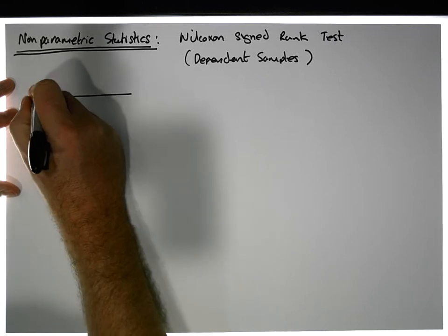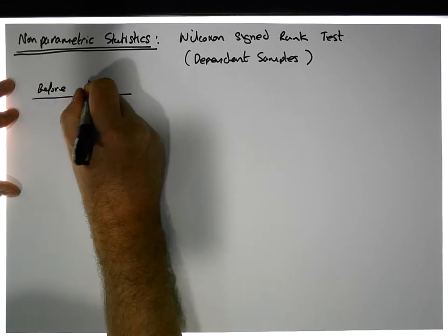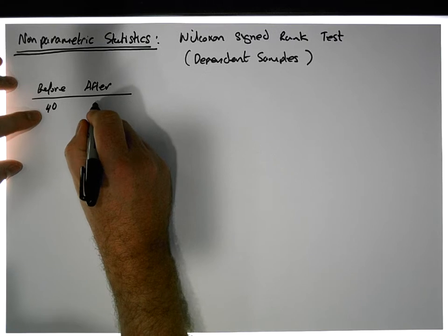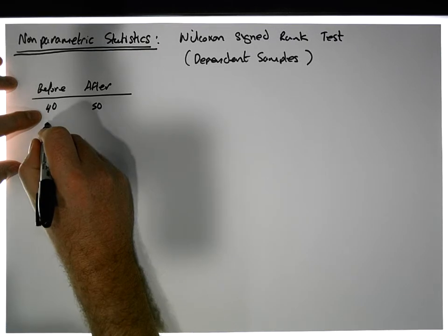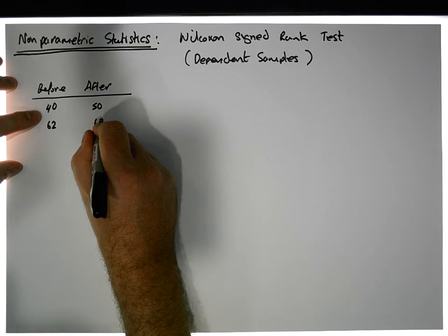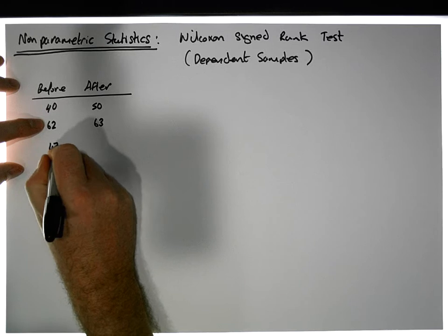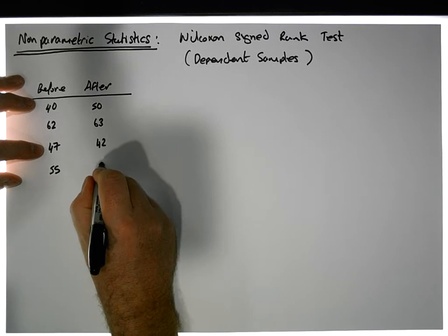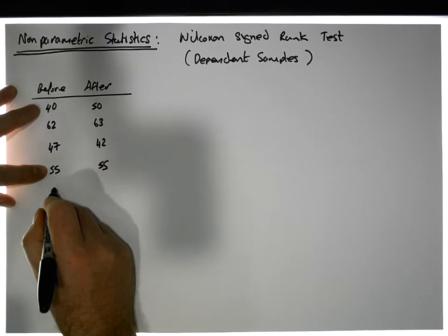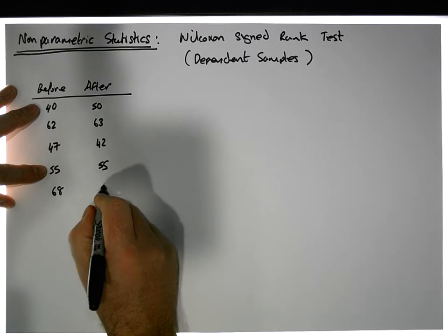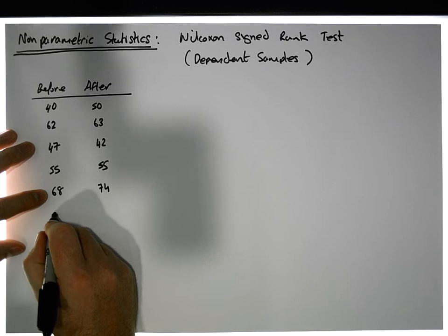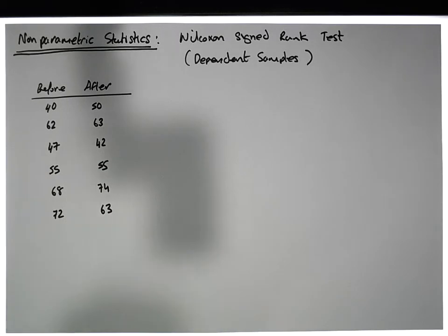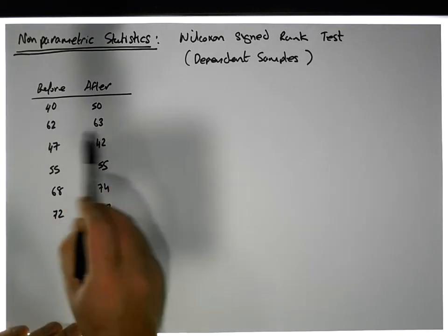To motivate this example, let's say we had a number of students measured on a math score before and after some sort of intervention. The first student scored 40% before and 50% after. The next scored 62% before and 63% after. The next scored 47% before and 42% after. The next scored 55% before and 55% after — no change. Then 68% before and 74% after, and finally 72% before and 63% after.